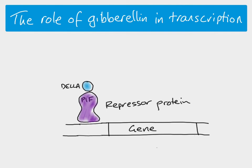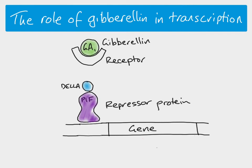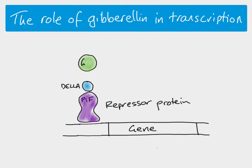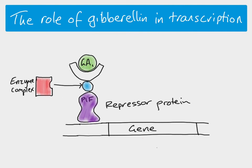Now for the role of gibberellin: this is the active form of gibberellin, and when we have the active form it is able to bind to a gibberellin receptor. Only the active form can bind to the receptor. Once gibberellin is bound to the receptor, that whole complex is able to bind onto the DELLA protein, which then initiates a few different things, ultimately resulting in a complex of enzymes breaking down DELLA.